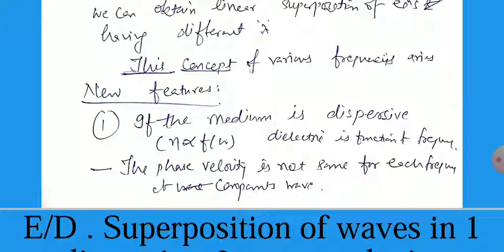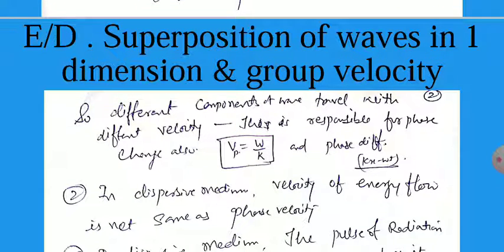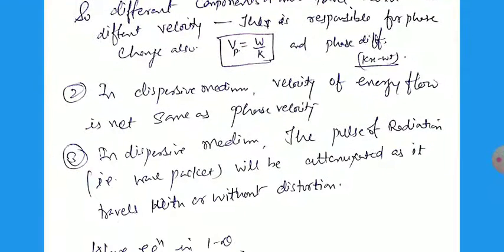Why? Because different frequencies have different refractive indices in the medium, so different waves move with different velocities and thus have different phase velocities. The different components of the wave travel with different velocities. This is also responsible for the phase change. So we can write the phase velocity vp equal to omega by k, and the phase difference is kx minus omega t, as we know very well for a single wave. In a dispersive medium, the velocity of energy flow is not the same as the phase velocity, because a single wave is not possible in the general way.